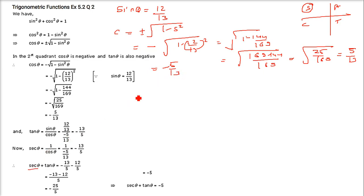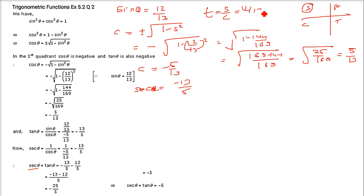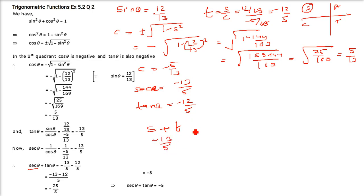Sec θ = 1/cos θ = -13/5. Tan θ = sin θ / cos θ = (12/13) / (-5/13) = -12/5. Therefore sec θ + tan θ = (-13/5) + (-12/5) = -25/5 = -5.